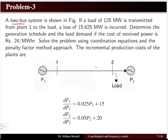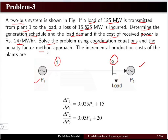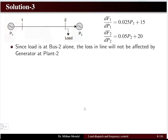The next problem involves a 2-bus system with plants P1 and P2 connected to bus 1 and bus 2. A load of 125 MW is transmitted from plant 1 to the load with a loss of 15.625 MW. We must determine the generation schedule and load demand if the cost of received power is 24 rupees per megawatt hour, using coordination equations and the penalty factor method. The load is only at bus 2, so losses are not affected by the generator at plant 2.